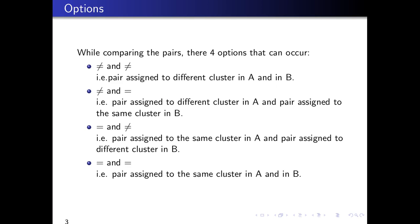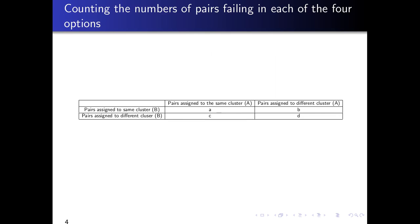While comparing the pairs, there are four options that can occur. First, the pair is not equal in cluster A and the pair is not equal in cluster B. Second, the pair is not equal in cluster A but equal in cluster B. Third, the pair is equal in cluster A but not equal in cluster B. And finally, the pair is equal in cluster A and in cluster B. We represent these four options in a table and assign them variables: A, B, C, and D.